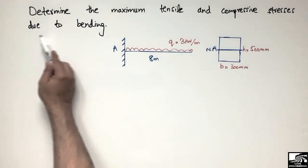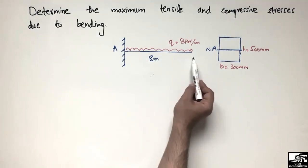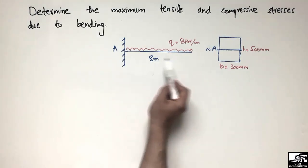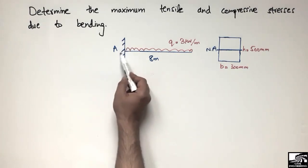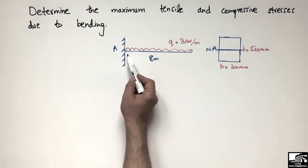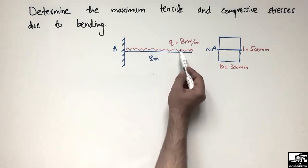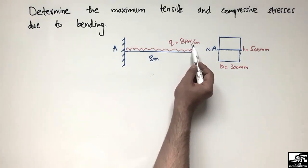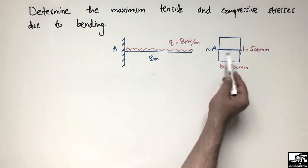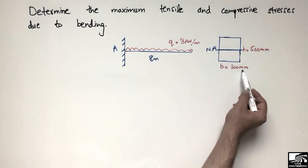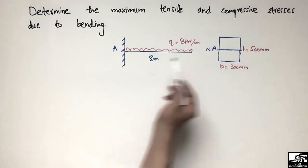We have a cantilever beam of length 8 meters, which has only one fixed support — that is the property of the cantilever beam. This beam is subjected to a uniformly distributed load of 3 kN per meter. The cross-section of the beam is rectangular, with a width of 300 mm and a height of 500 mm.